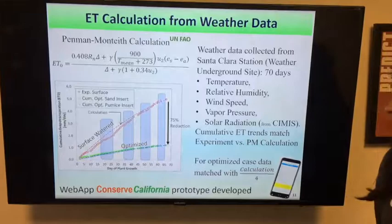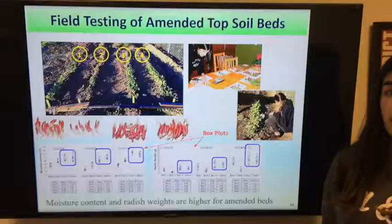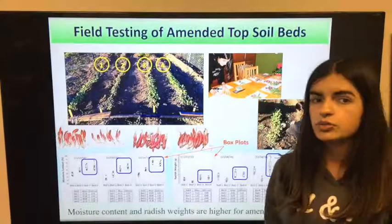And for the optimized method, there is a 75% reduction. The moisture content and the radish weights were higher for beds 3 and 4, which were amended, and this is shown in these box plots.